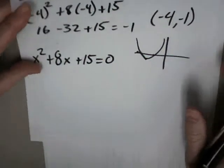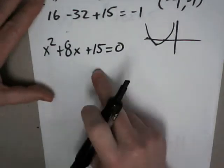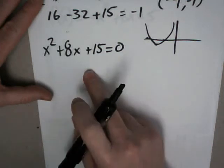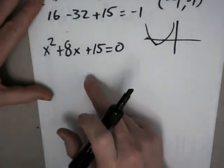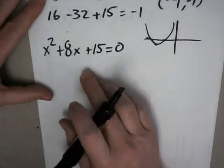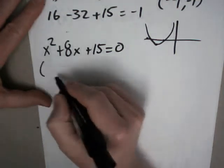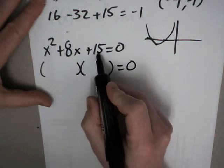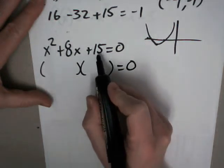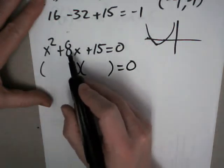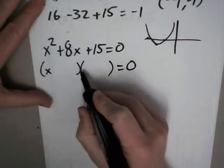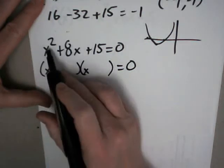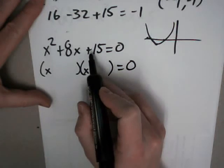So now you have some options. You can either complete the square, you can factor this, or you can use a quadratic formula. So I would suggest you try factoring it first. Factoring it where you do this guy right here. And multiples, factors of 15 that would get you 8.